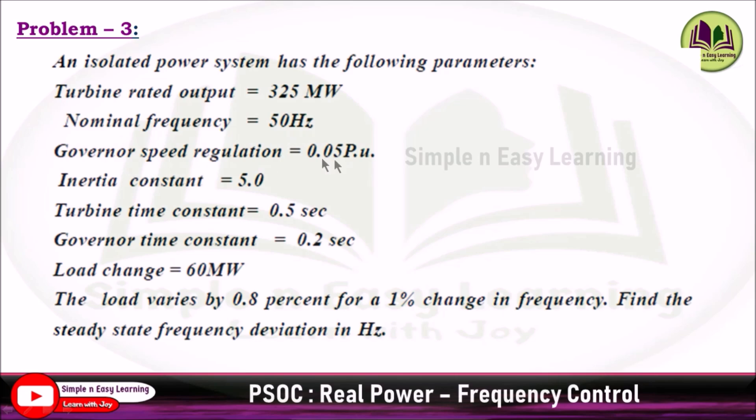Inertia constant H is 5.0, turbine time constant is 0.5 second, governor time constant is 0.2 second, load change ΔPd is 60 megawatt. The load varies by 0.8 percent for a 1 percent change in frequency. Find the steady state frequency deviation in hertz.